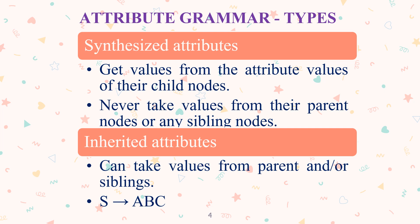For example, S implies A, B, C — meaning S will take the values of the child nodes A, B, C. It will not affect siblings or any other nodes.